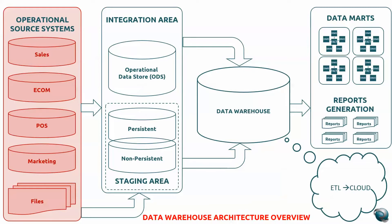The data residing in every source system may not be in the same format. Sales may be generating revenue records through an Excel spreadsheet or a PDF, whereas e-commerce is generating records in an Oracle table or a SQL Server table from a relational source system. Point of sales is another format, and marketing may also be in a different file format. As a business owner, you want to know how much revenue is being generated on a given day — how can you consolidate data from different channels to see the total revenue received?